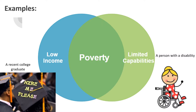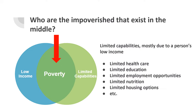You can have examples of where someone may have low income but sufficient capabilities, such as a recent college graduate, or limited capabilities but sufficient income, such as a person with a disability. So now that you understand the people on the outside of this overlap, you might be asking: who are the impoverished people that exist in the middle?